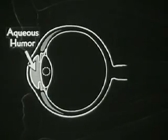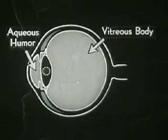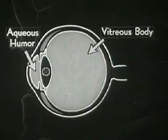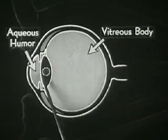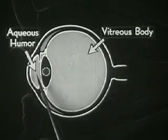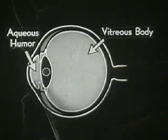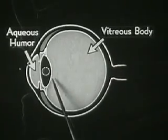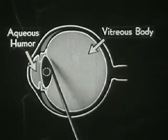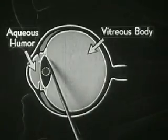The lens itself lies between two liquids. These liquids can exert pressure. All liquids cannot be compressed. You may ask then, how is this soft, pliable body of the lens made to take on the different degrees of convexity necessary for accommodation?